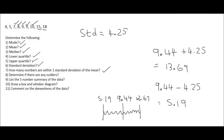If they said two standard deviations, you would add 4.25 to the upper boundary and subtract another 4.25 from the lower boundary, making the range even bigger.